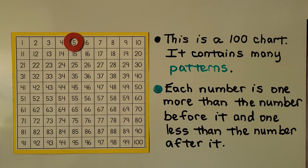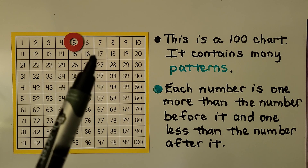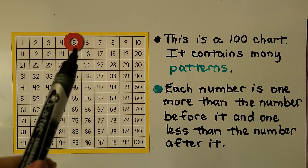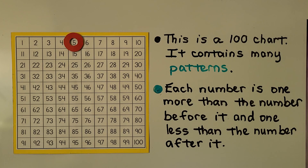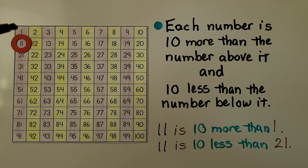This is a 100 chart. It contains many patterns. Each number is one more than the number before it and one less than the number after it. If we choose the number 5, 4 is one less, 6 is one more. Each number is 10 more than the number above it and 10 less than the number below it. 11 is 10 more than 1, and 11 is 10 less than 21.